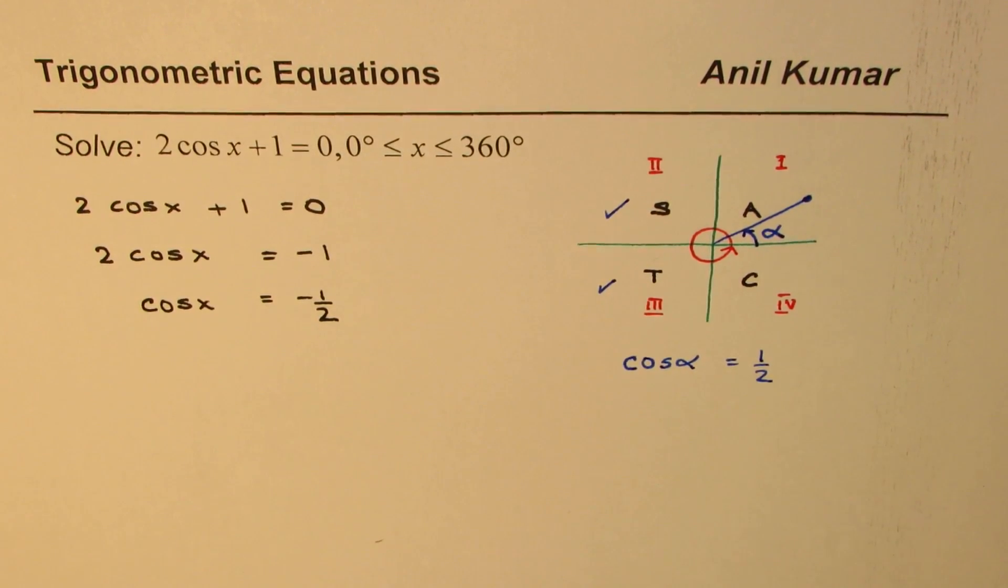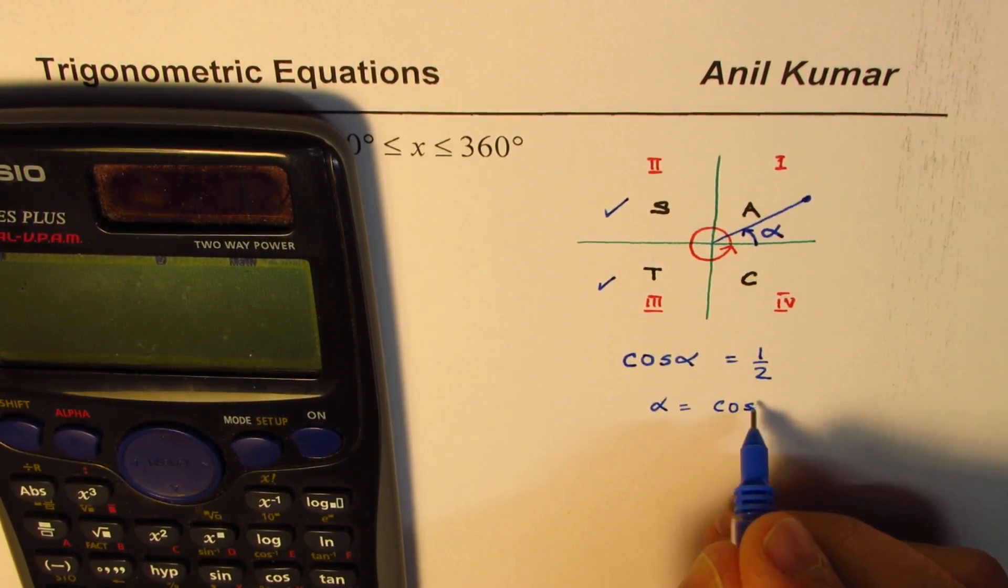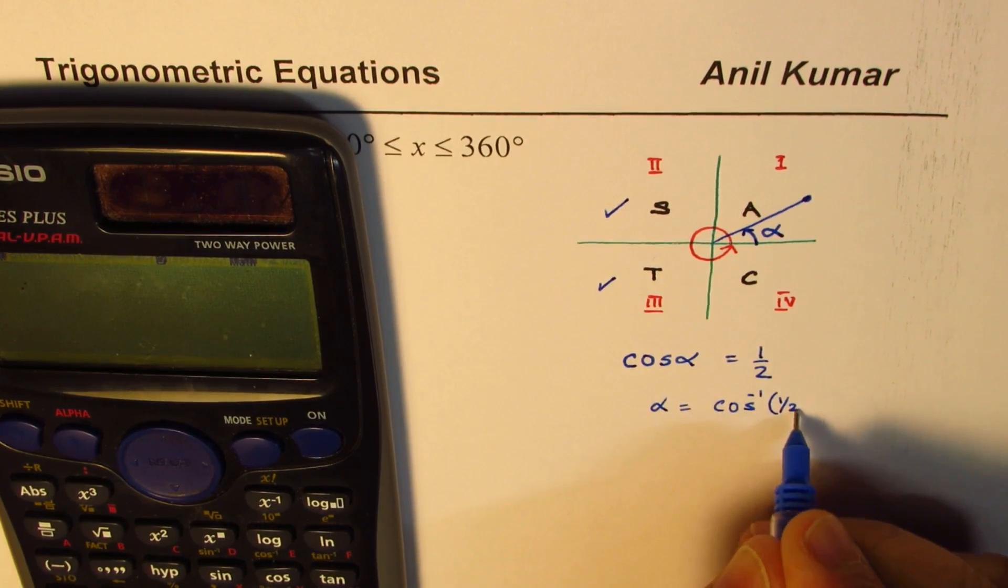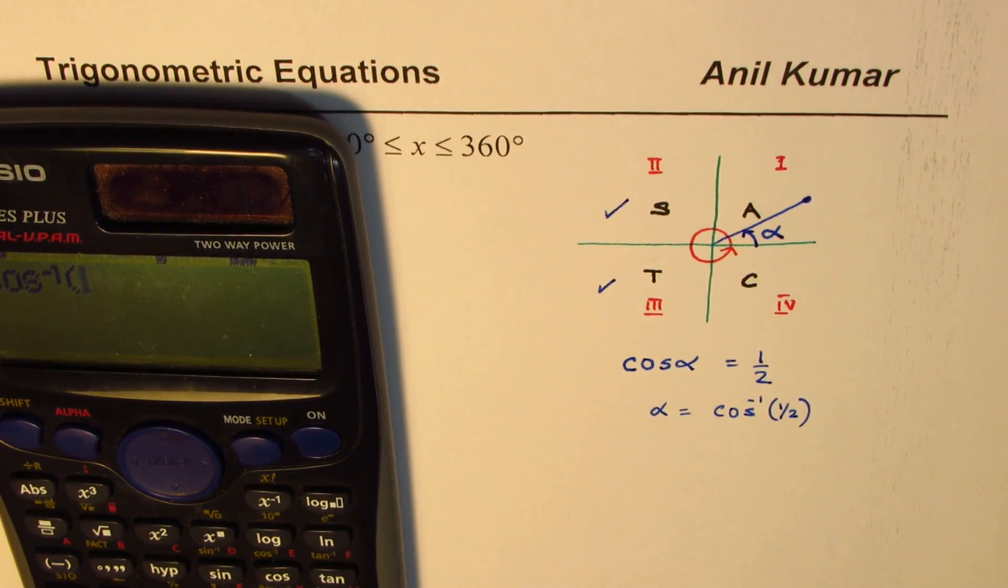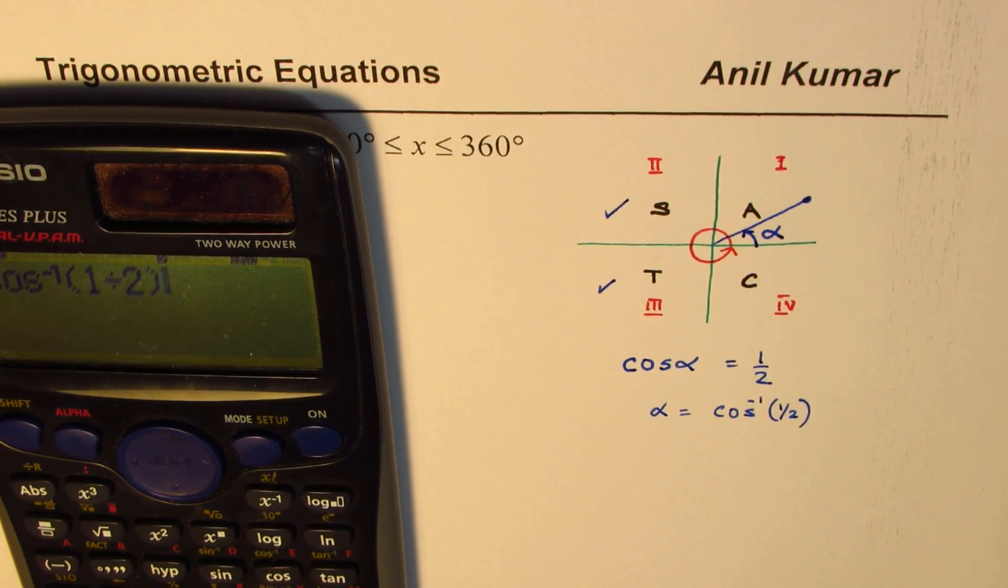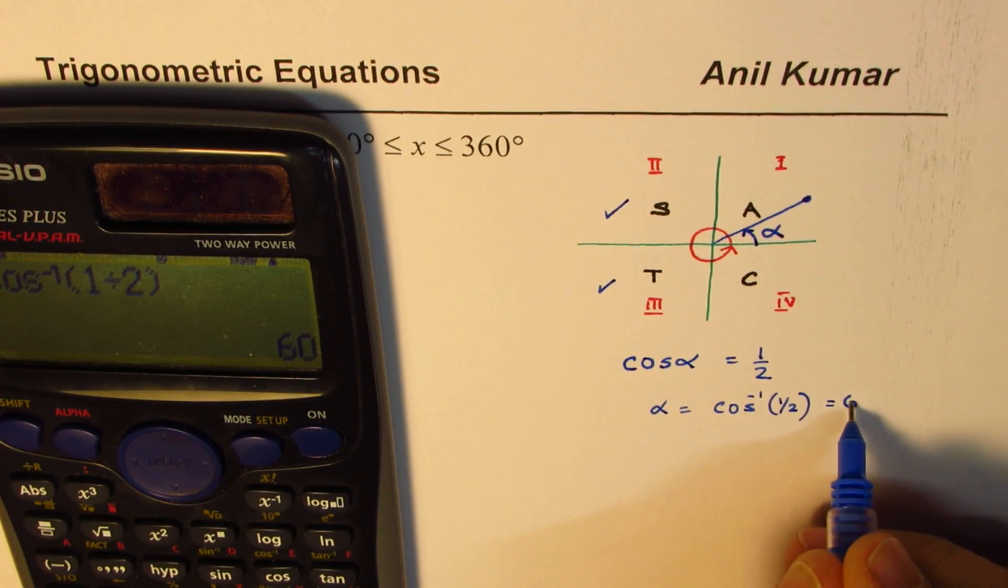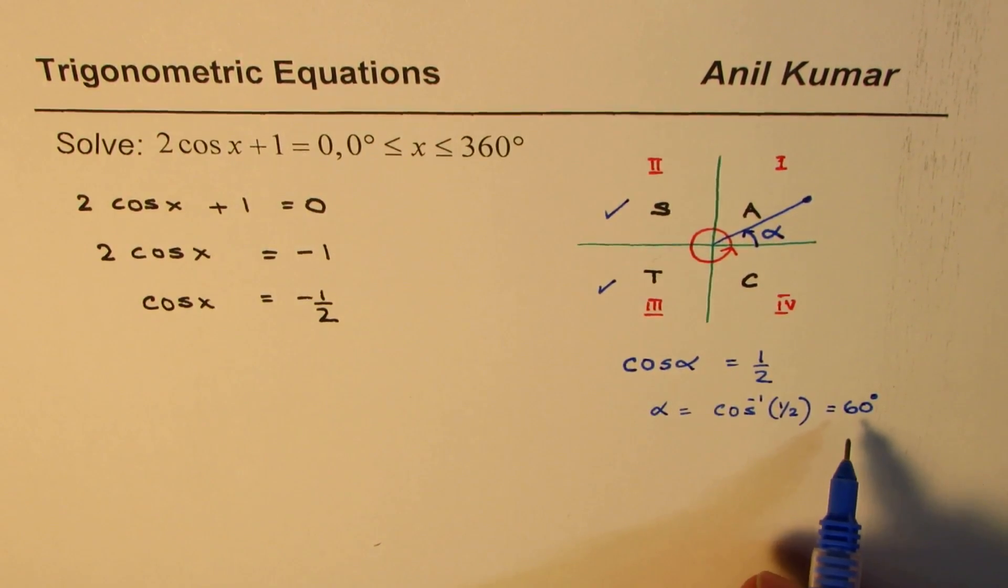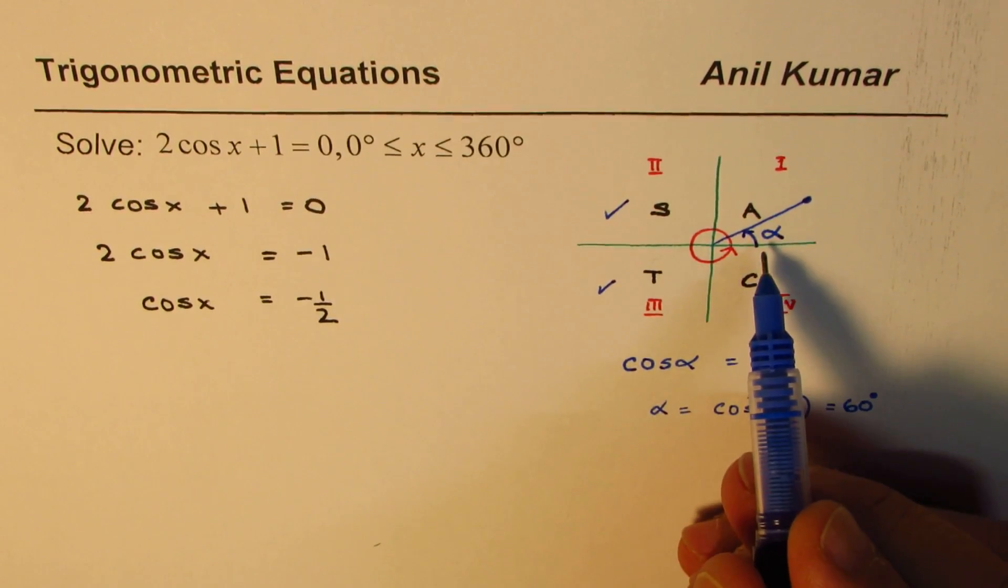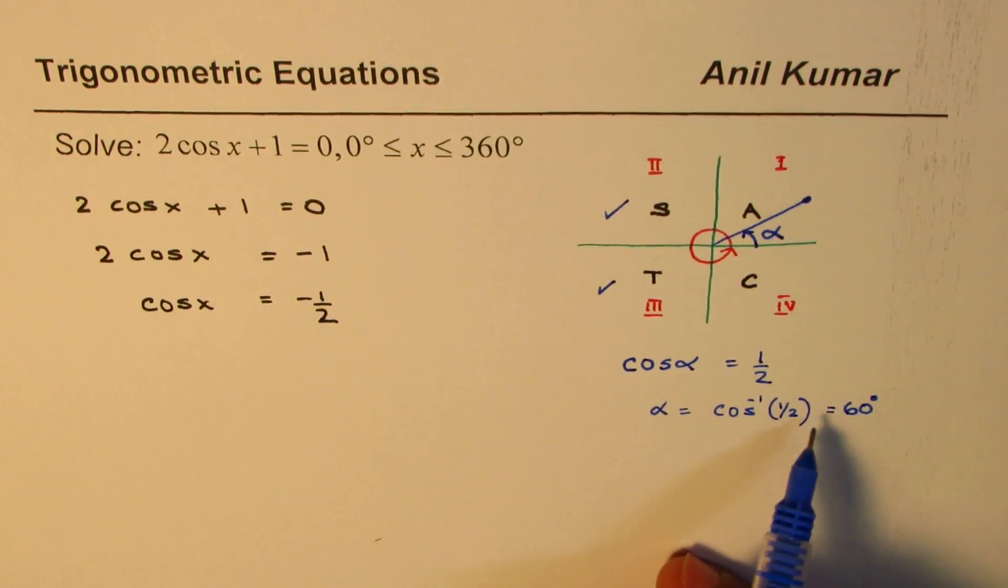That is kind of the strategy. You could always use a calculator and say well alpha equals cos inverse of half. So the angle is cos inverse of half. So 1 divided by 2 equals to, so you get 60 degrees. So that gives you 60 degrees. So in degrees that is the angle which gives you alpha value as half. But what you really need is cos alpha as minus half not half.